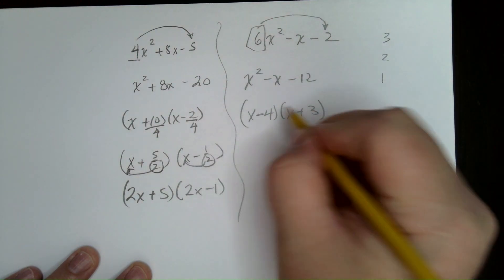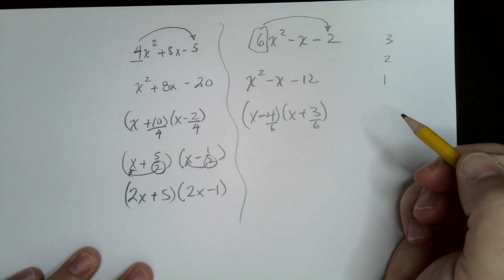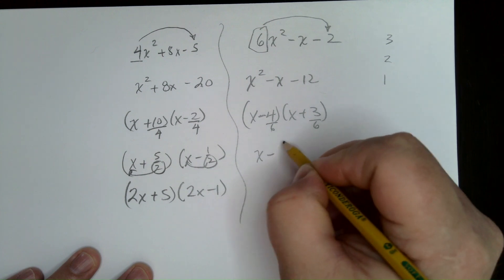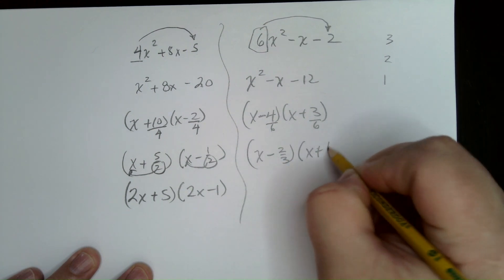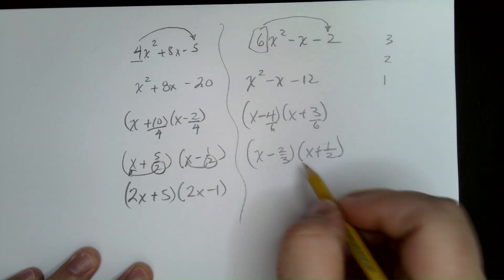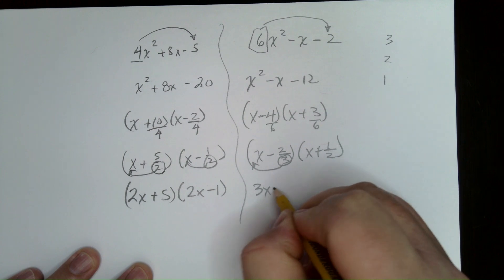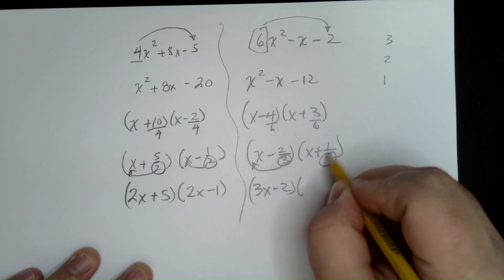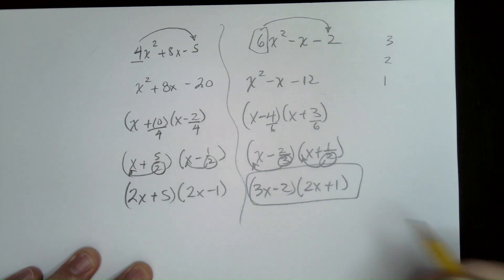So, now we've got to take care of that 6 that we got rid of at the beginning. We're going to divide both of these by 6 and then reduce. So, 2 over 3. 1 half. Okay? Then, take that denominator. Multiply it to make it the coefficient. Pretty cool.